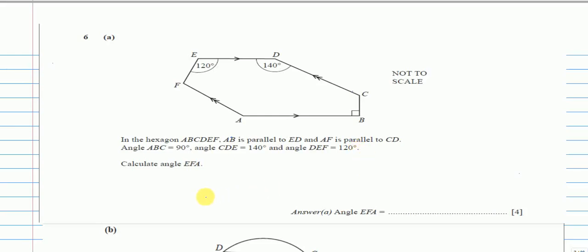Question 6a. We are given a hexagon where there are two parallel sides and one angle is 90, one is 140, and the other one is 120. We have to calculate angle EFA — this angle — and it's worth 4 marks, which means it's not going to be straightforward. So we have to find the other missing angles to get this one.